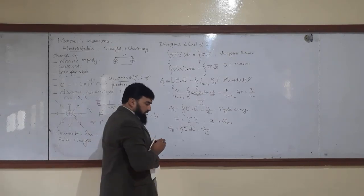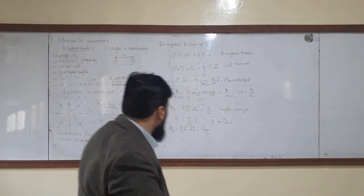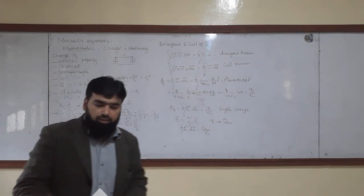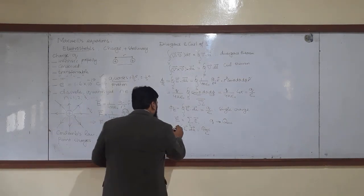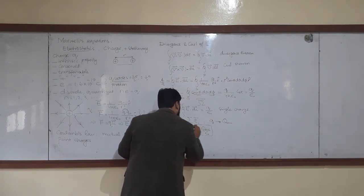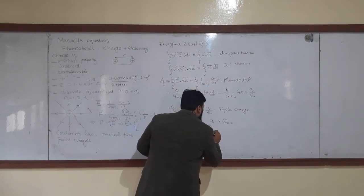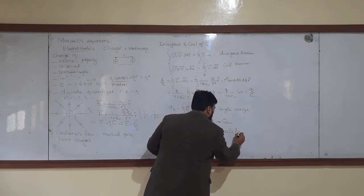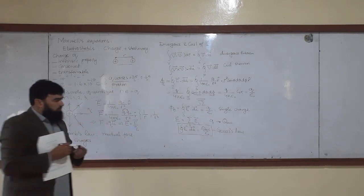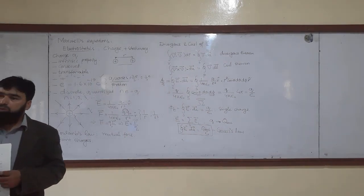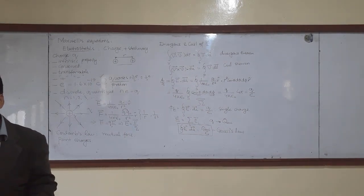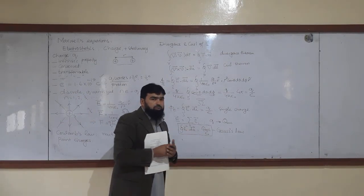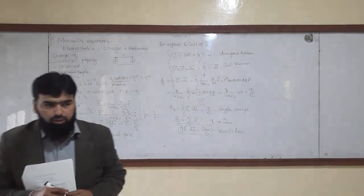Removing the flux symbol φ_E, we have the closed surface integral of E dot dA equals Q_enclosed over ε₀. This equation I call Gauss's law — it is the first equation of Maxwell.